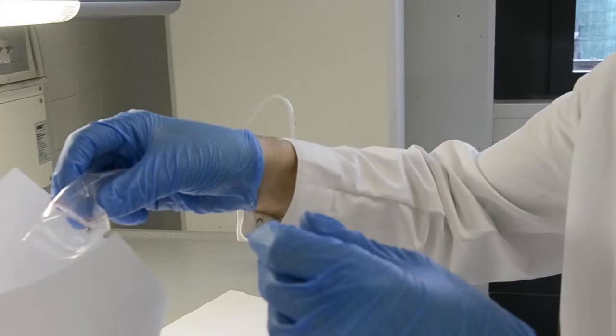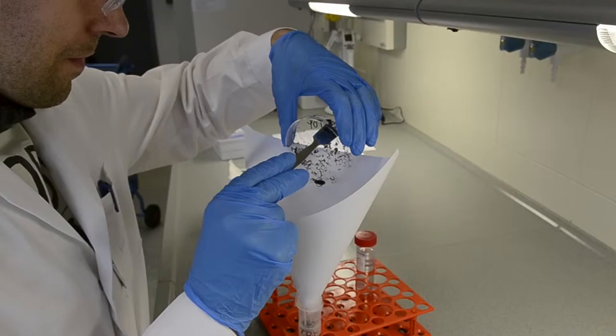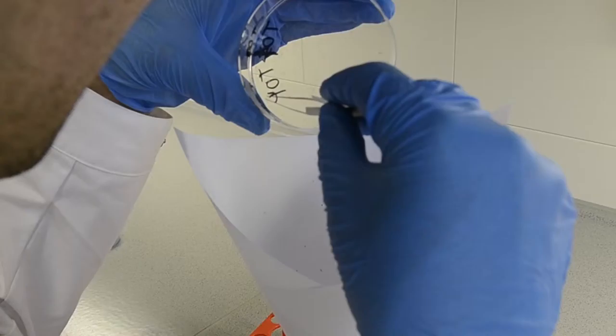Next, ten steel beads are added into the tube for grinding. Then, the specimens are carefully scraped from the Petri dish into the tube using the funnel. They are electrically charged, so it can be quite difficult to remove all of them.